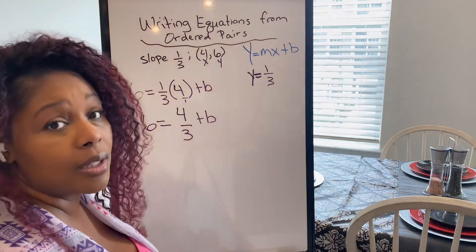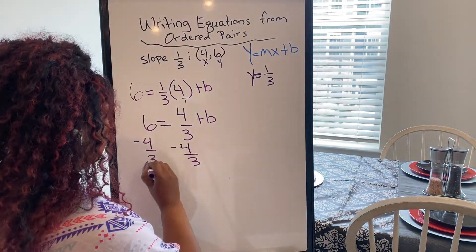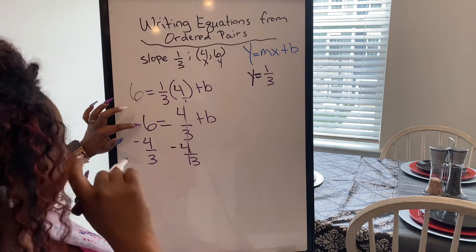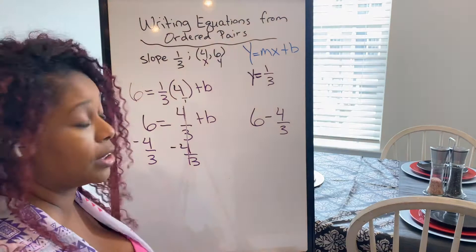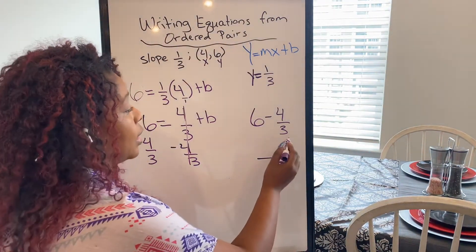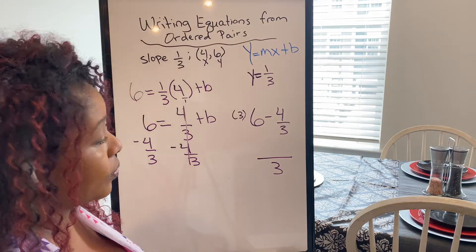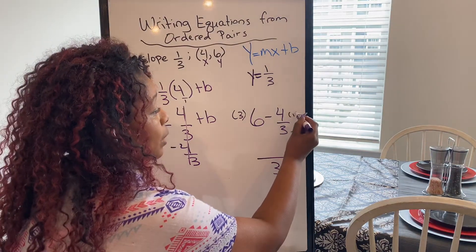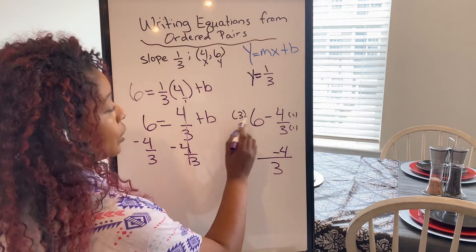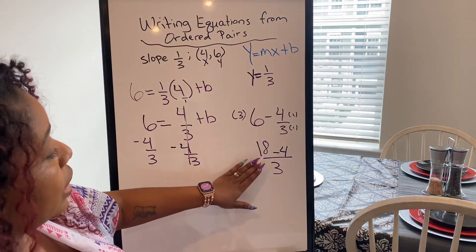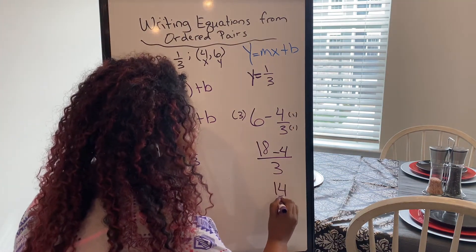Then I'm going to subtract. I'm going to use what I remember for my one-step equation and subtract four thirds from both sides. These cancel out. Now, how do I do a whole number minus a fraction? Well, turn this into an equivalent fraction. If everything has to have a three on the bottom, then I need to multiply this by three. This is just multiplied by one, so that stays the same. The minus four thirds stays the same — minus four thirds. Three times six is 18. So now I have 18 minus four.